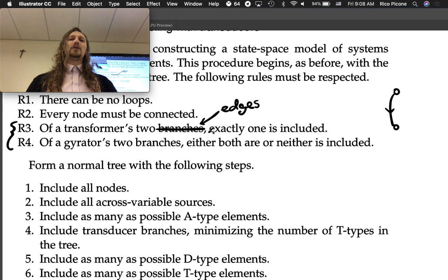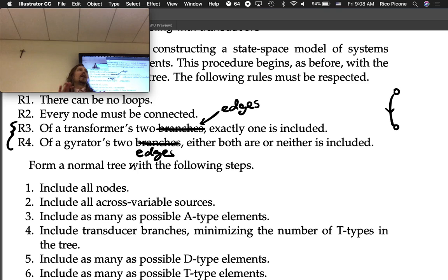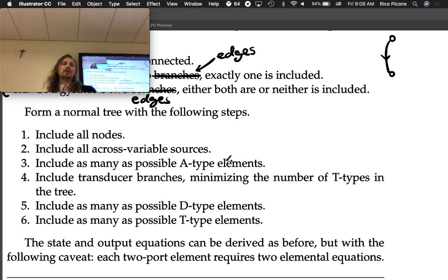So a transformer in your graph, you either have to choose one edge or the other edge to be in. With the gyrator, you need to either have both edges in the normal tree or neither of them. So there's two options. If you've got four different transducers, then you have 2^4 options in terms of configurations. That's a little bit messy. What you do typically is you pick one and then you try to see if you change things, if you could add any more T-types to your normal tree or reduce the number at all. The idea is that you choose one that results in the fewest possible T-types in the tree.